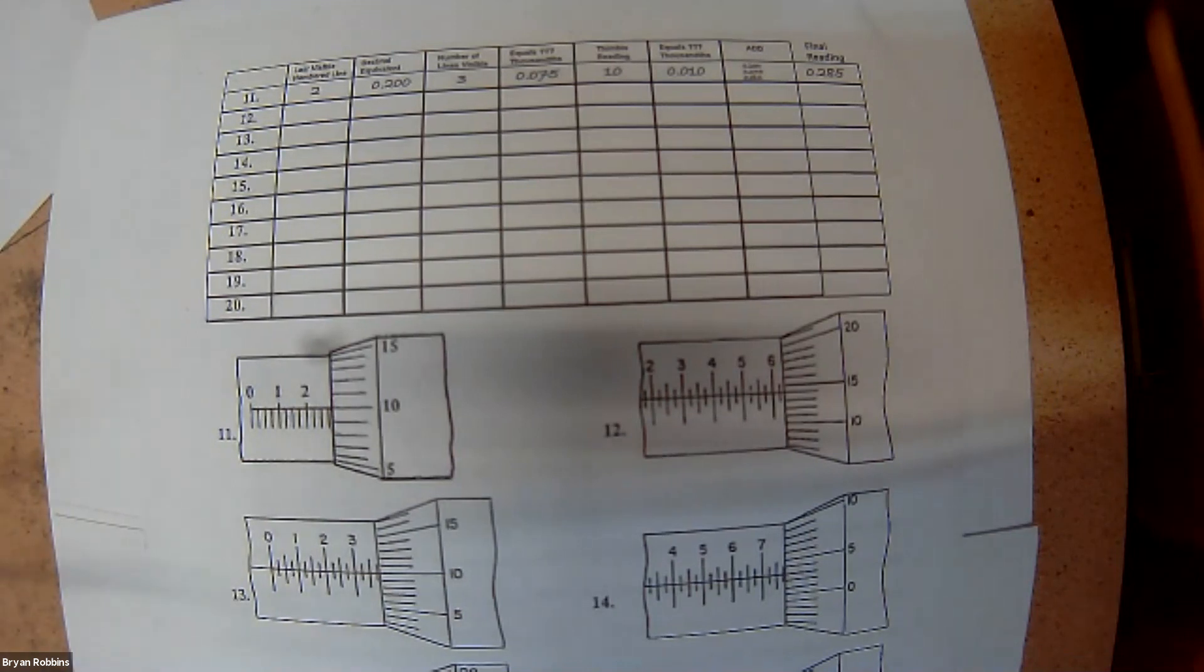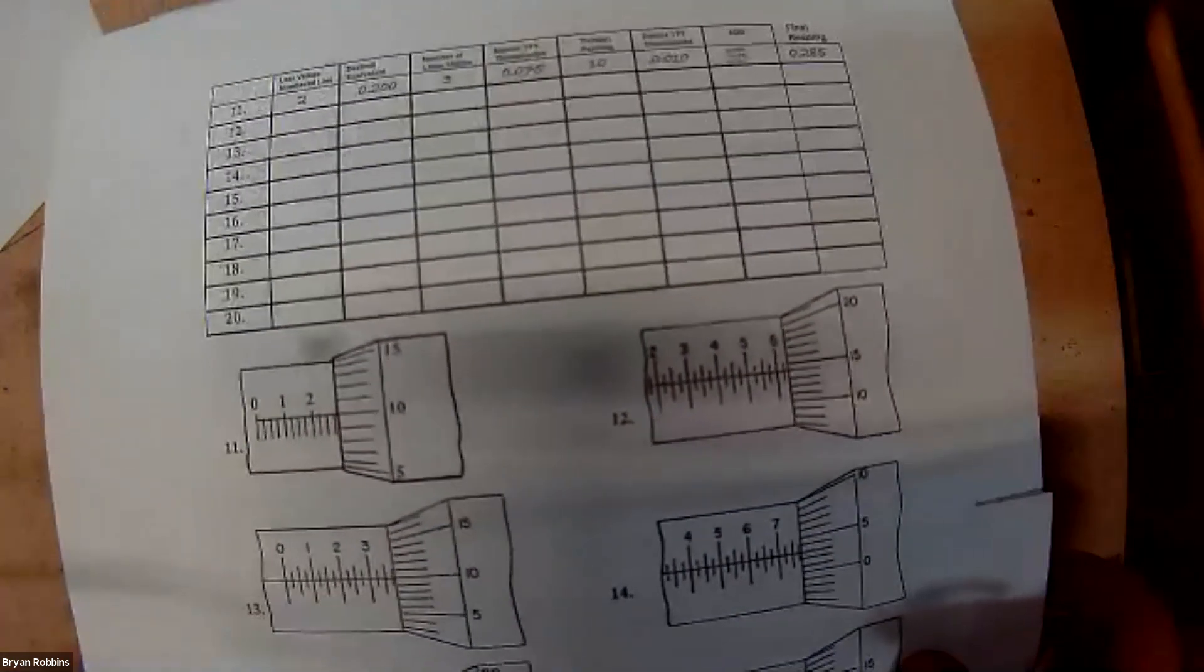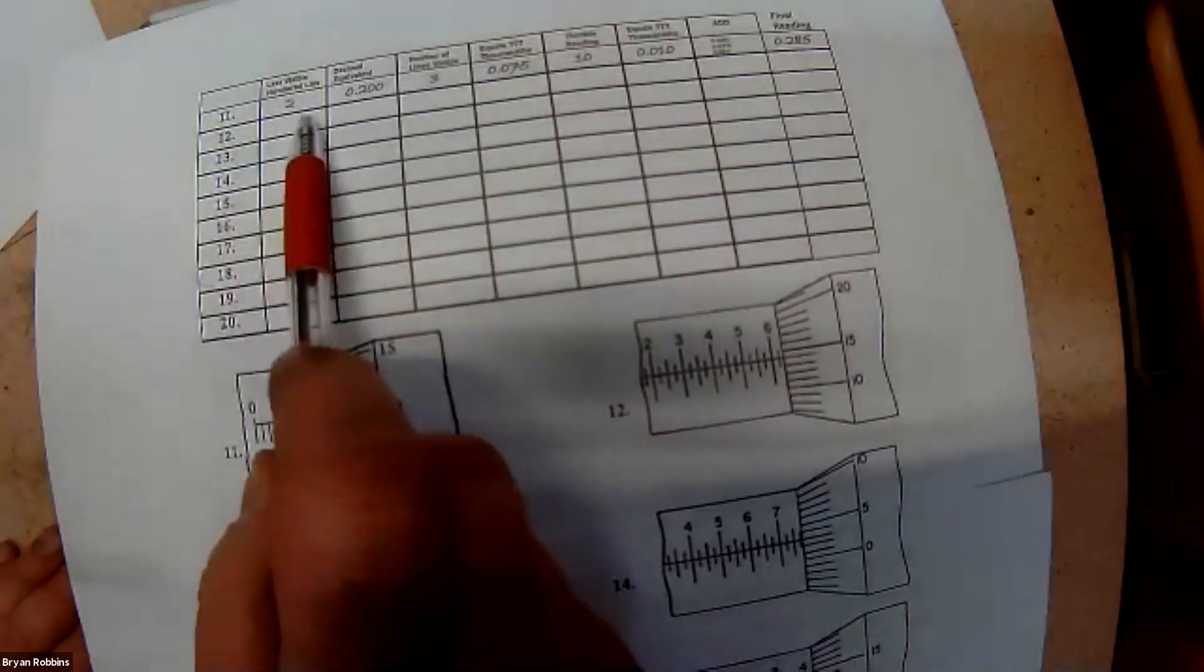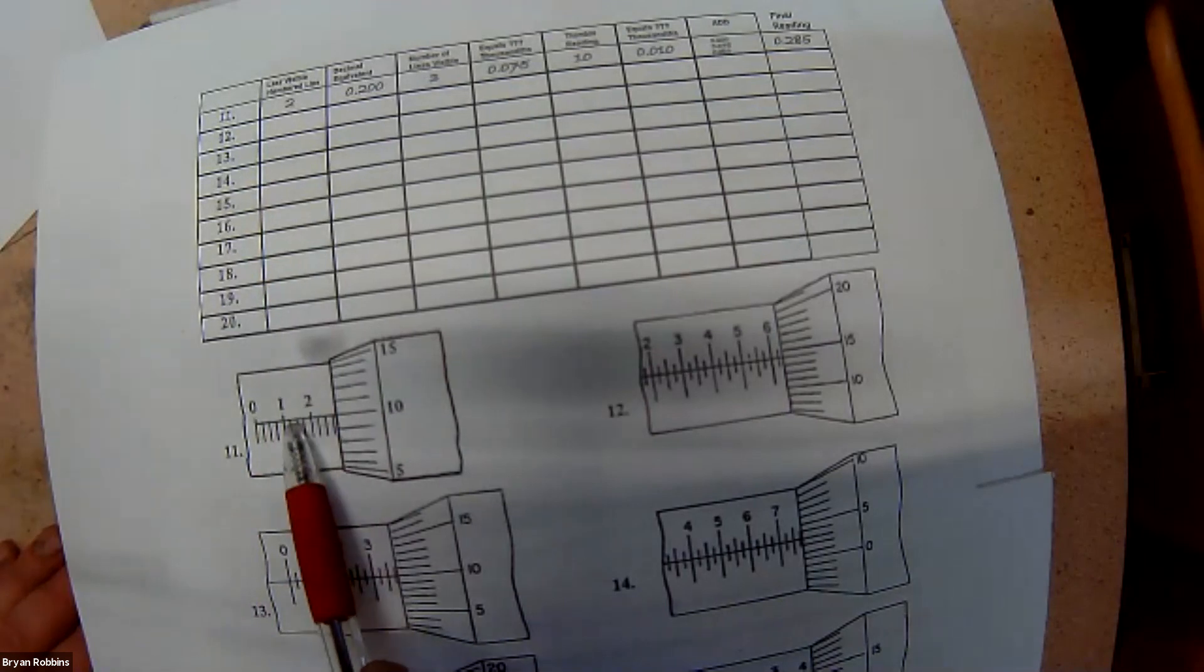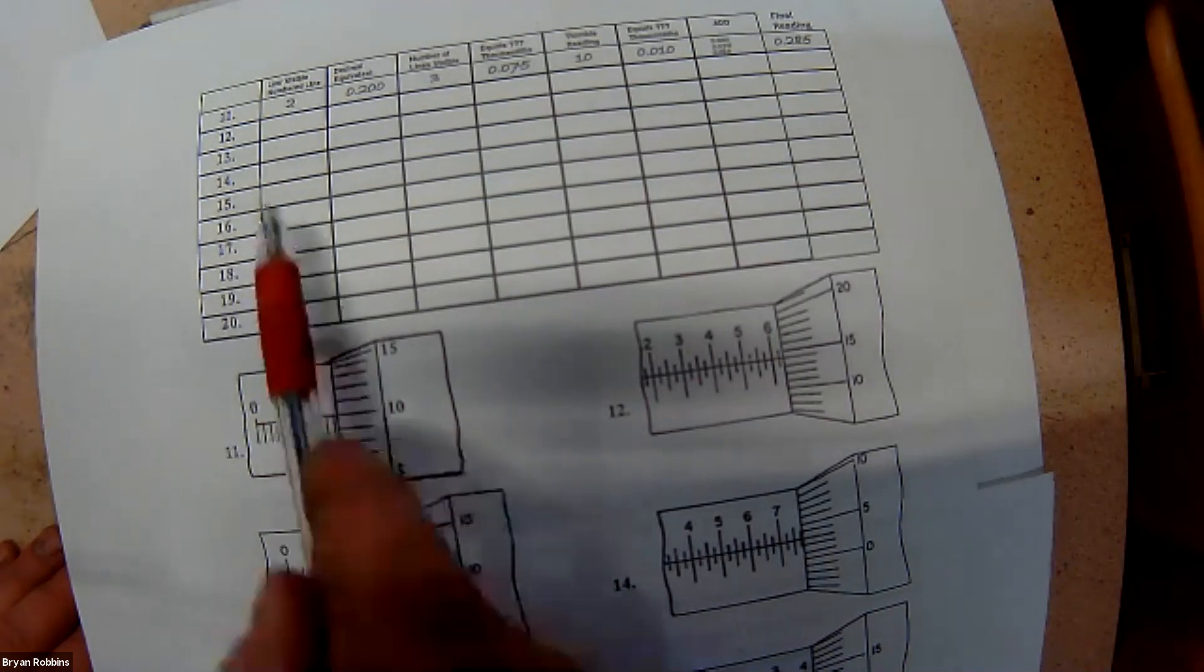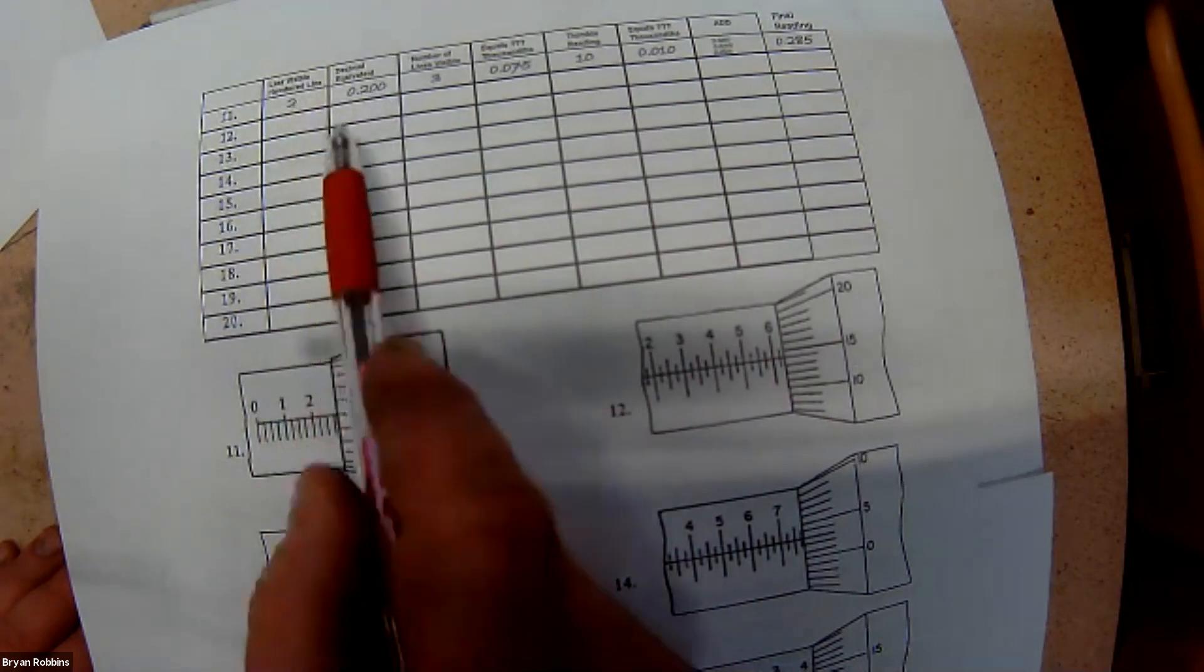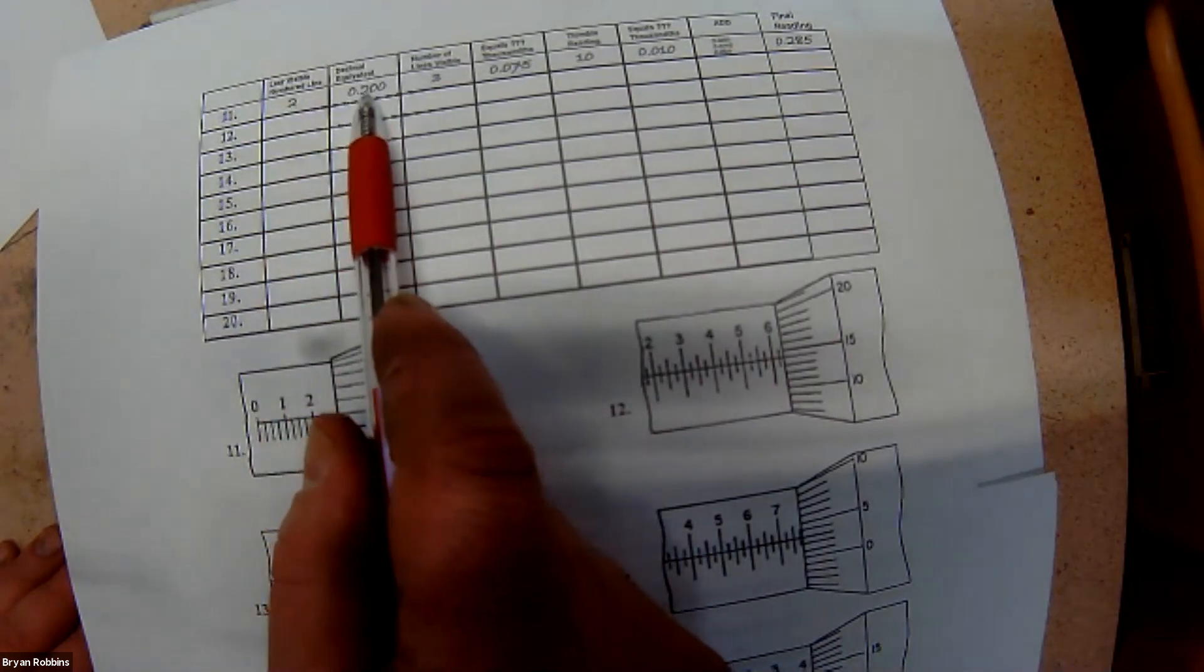So, doing some micrometer readings. I got just a simple micrometer worksheet here, and we'll take a look at it. Let's take a look. Number 11 is already filled out for us. So, if we take a look at number 11, the last visible numbered line. Remember, that's in hundreds of thousandths of an inch, so, is a 2. So, we've written a 2 up there. The decimal equivalent to that is two hundred thousandths, which is .200.